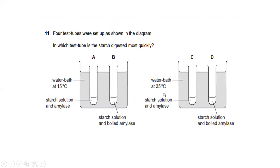Number 11. Four test tubes were set up as shown in the diagram. In which test tube is the starch digested most quickly? You can see if A is where water bath at 15 celsius and the starch solution and amylase. B, starch solution and more amylase with the current present of water bath at 15 celsius. Starch solution and amylase means that the effect of temperature on digestion of starch by amylase. As a result, starch and amylase reaction is affected by rising of temperature. So if you can see, C is the answer for the question.